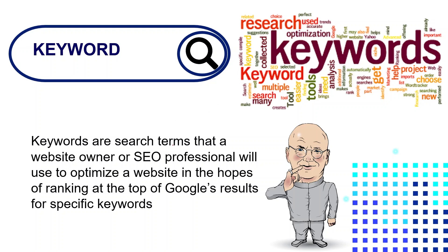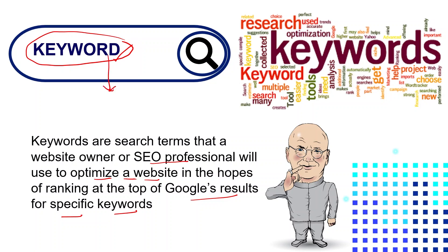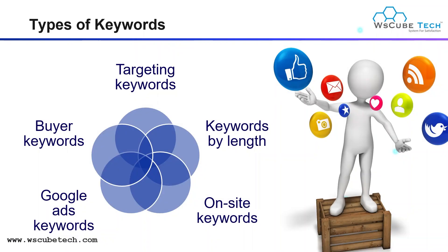Keywords are the search terms that a website owner or SEO professional will use to optimize a website, in the hope of ranking at the top of Google's results for specific keywords. If you figure out a particular keyword that users are searching, SEO professionals use that keyword in their website just to rank it. This is the main importance of keywords.